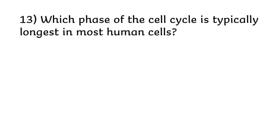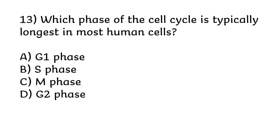Which phase of the cell cycle is typically longest in most human cells? G1 phase, S phase, M phase, or G2 phase. Correct answer is option A, G1 phase.